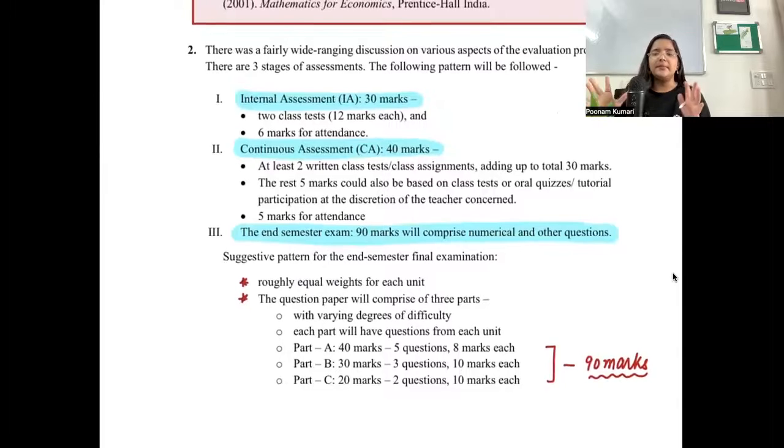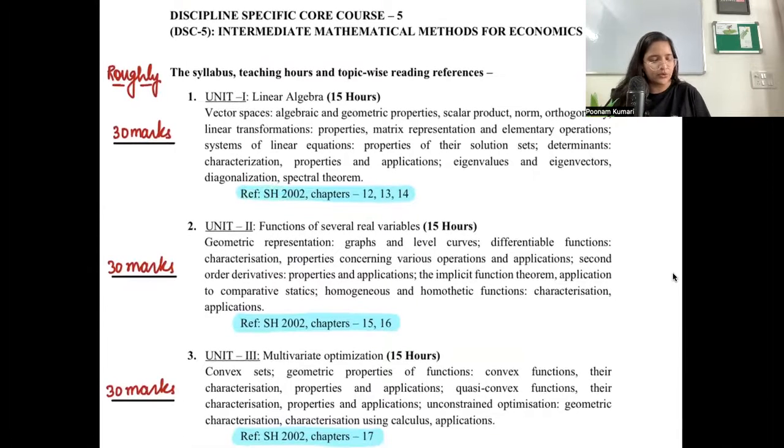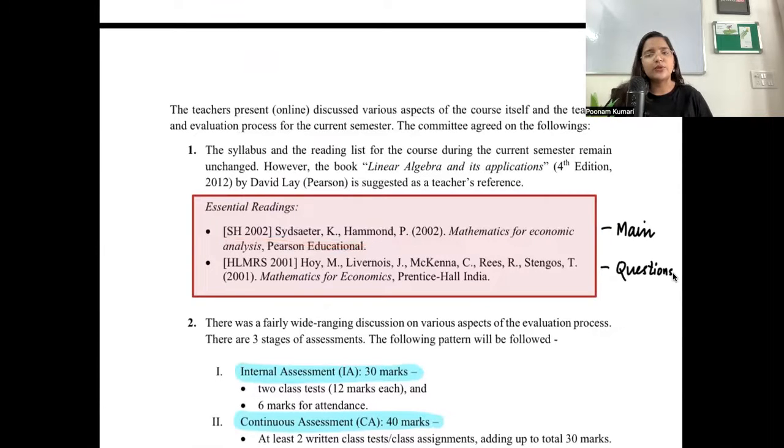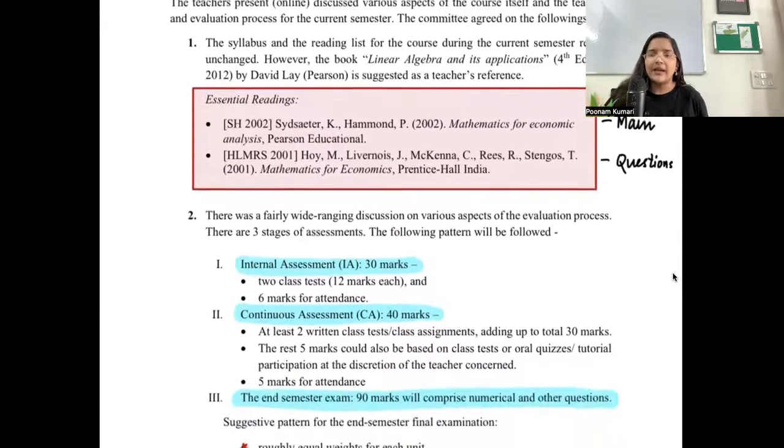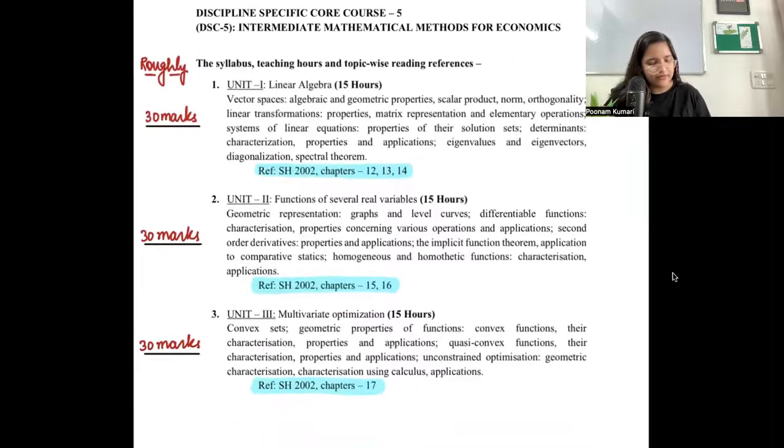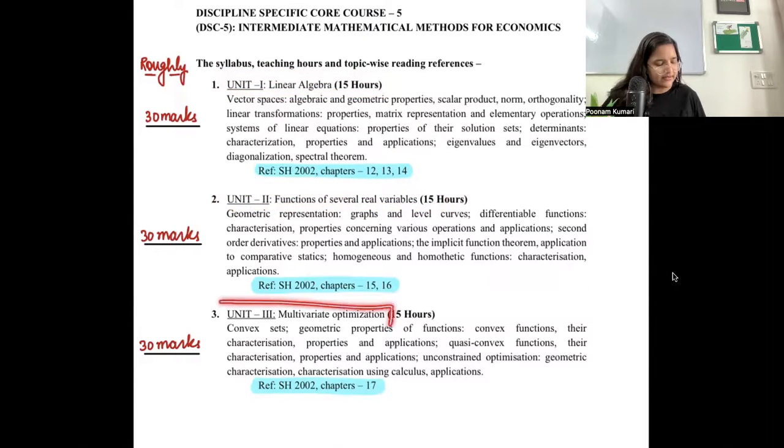That was the brief overview of your marks, internals, continuous, end term, or how things are divided between units. Now your exact reading list that you have to refer is SSH 2002, which is Sydsaeter and Hammond 2002 book. This is your main book. First unit will be linear algebra. Second unit is functions of several real variables. And the third unit will be multivariate optimization.